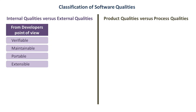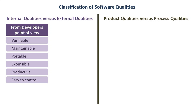The software should be able to expand as needed — this is extensible. The manager of the software project wants the process of software development to be productive, meaning various types of information like reports, databases, charts, graphs, etc. should be produced through the software. The process should also be easy to control. All these qualities are from the developer's point of view and are known as internal qualities.